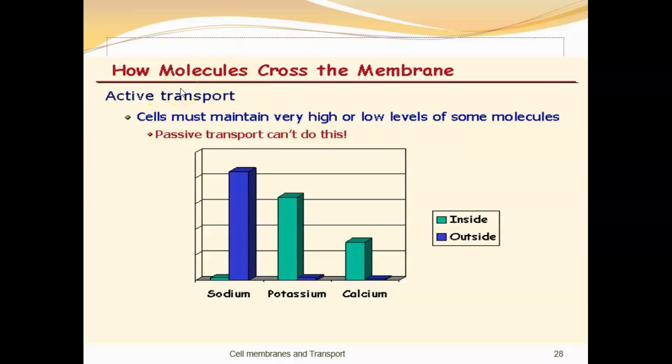Now active transport - in nature, and this is true of all cells, sodium is found on the outside and potassium is found on the inside. This has to be maintained. If you let natural diffusion take place, these will become equal on both sides. So a living cell is putting energy in to maintain this, and that's known as active transport.